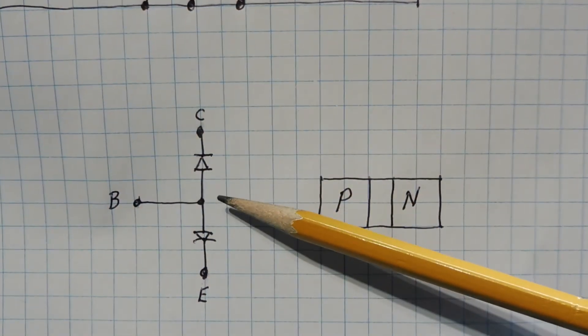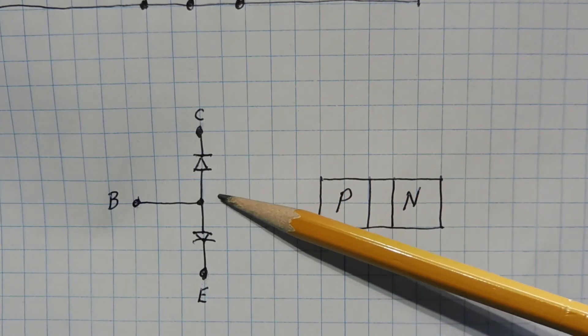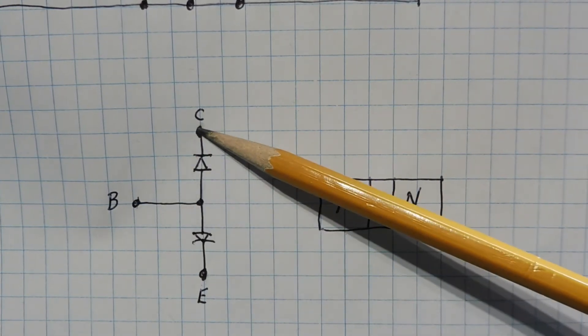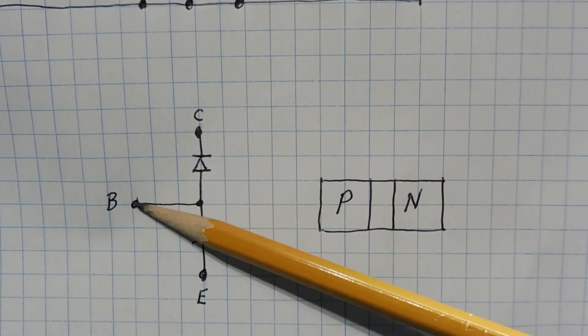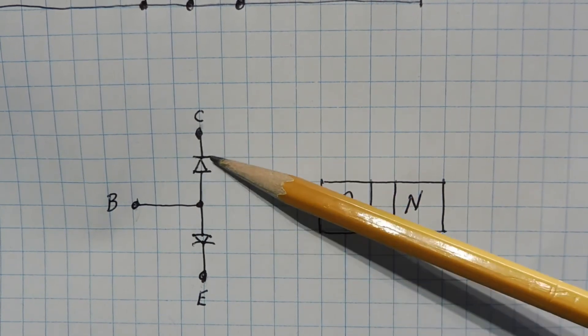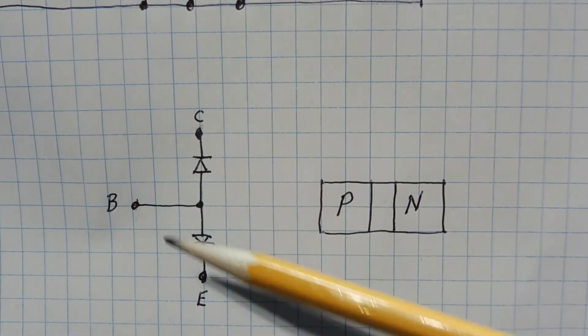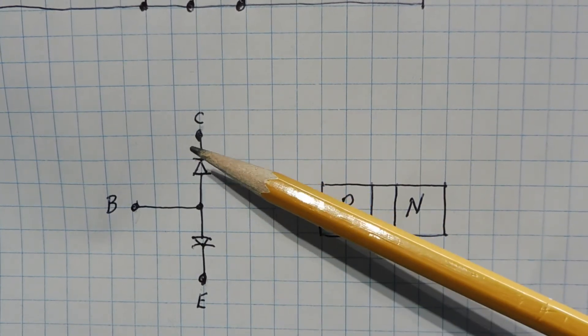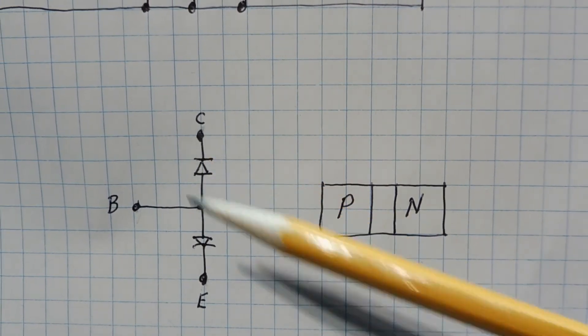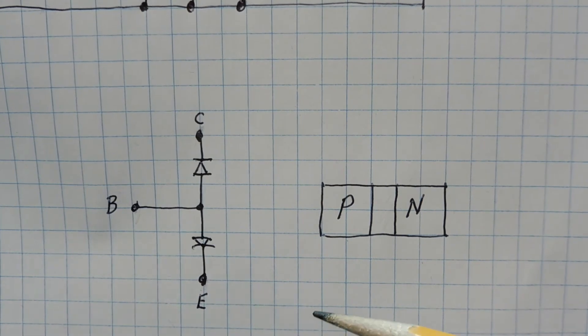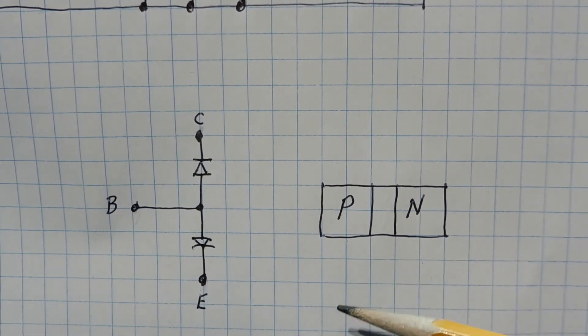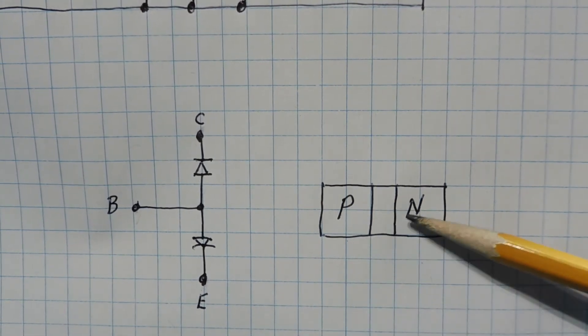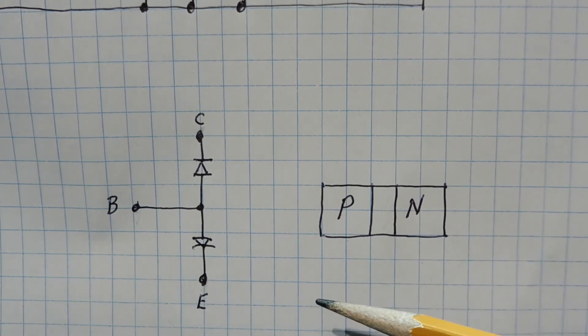Here's a diode equivalent circuit of an NPN transistor. So here's our base, collector, and our emitter. Between the base and collector, we have a reverse bias diode. And between the base and emitter, we have a forward bias diode. A diode is just a PN junction. Just a bit of silicon that's been doped with some impurities. We doped it to make a P material and N material. And we put them together, we have a PN junction, which basically is a diode.